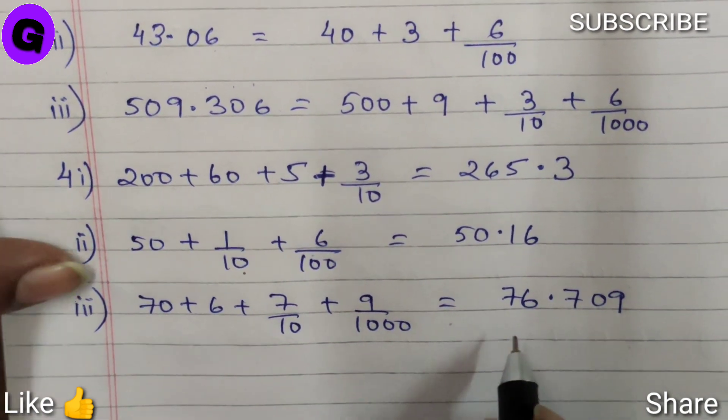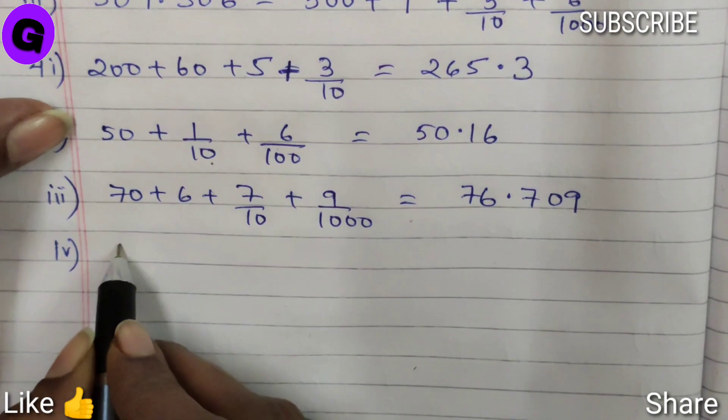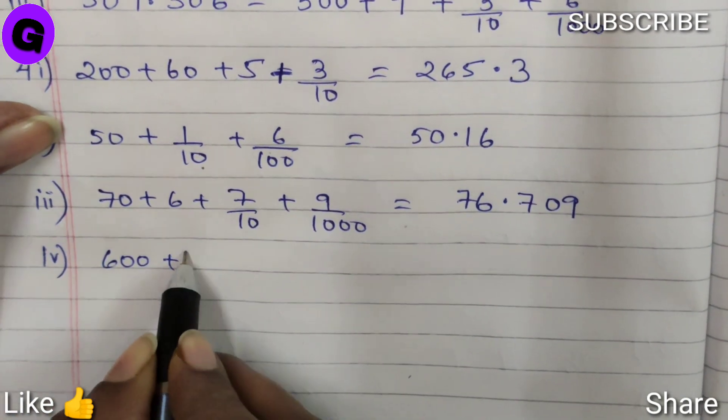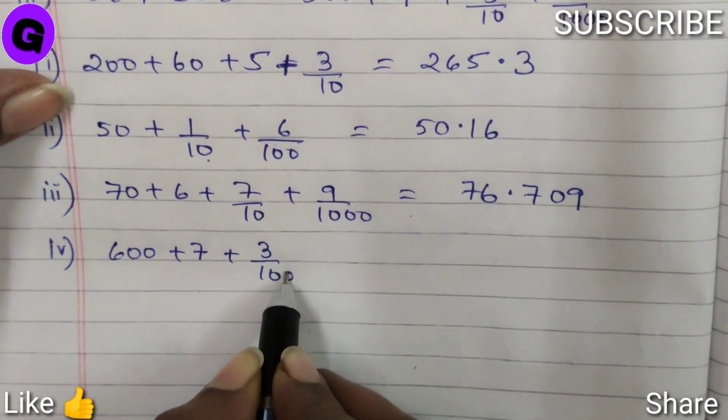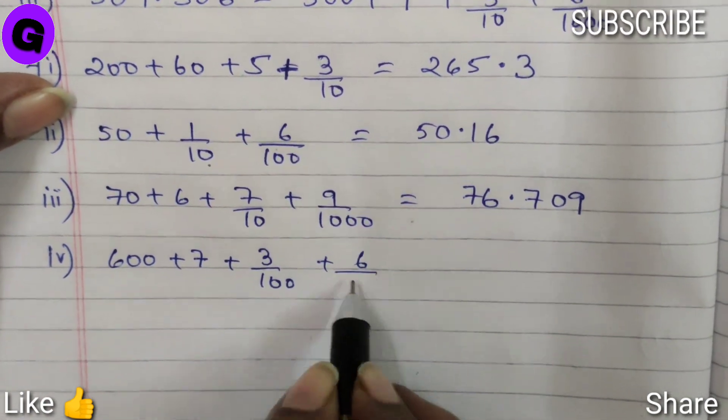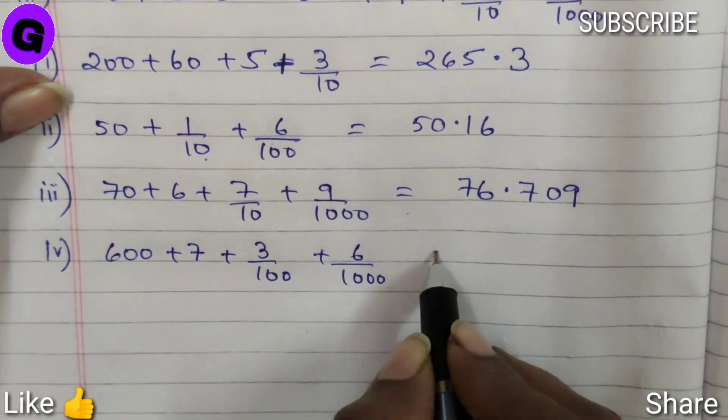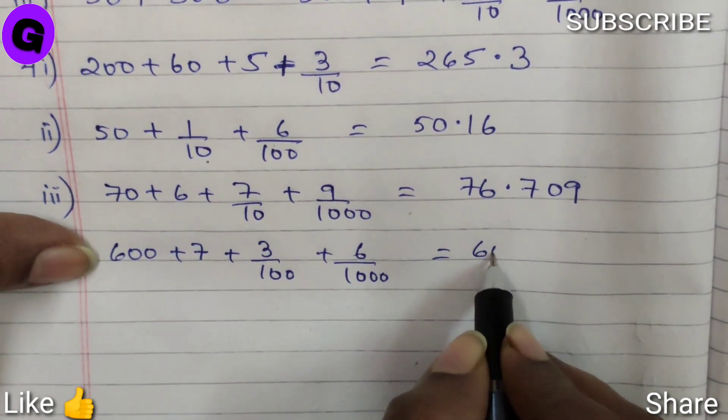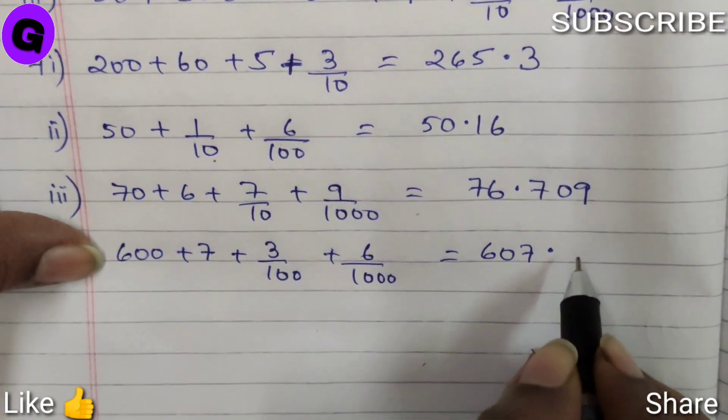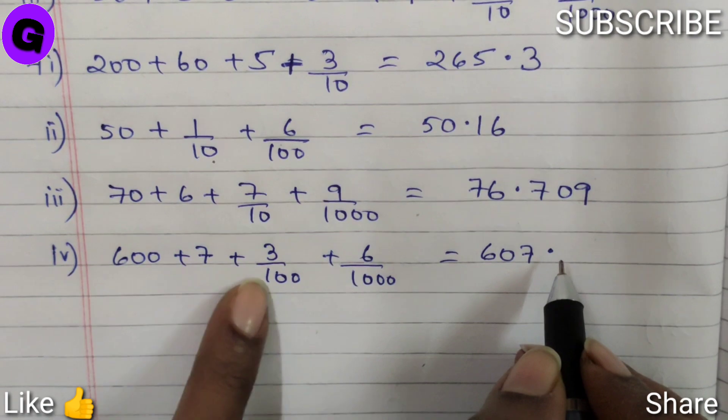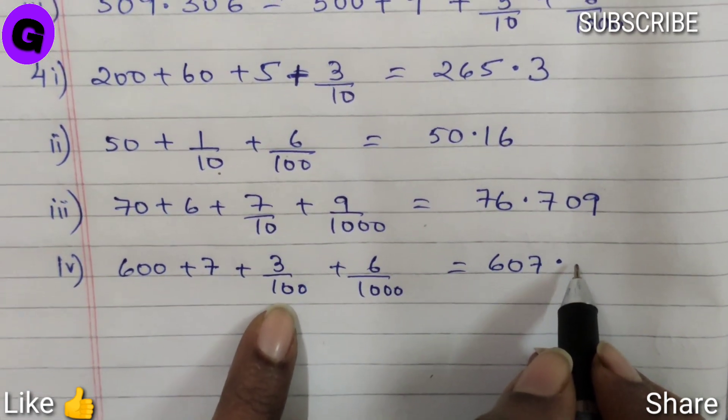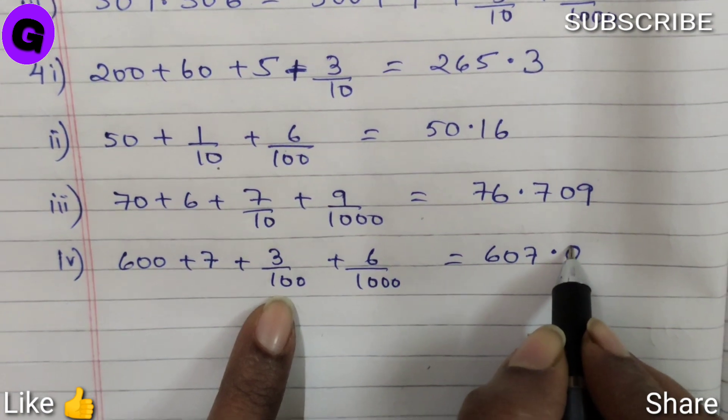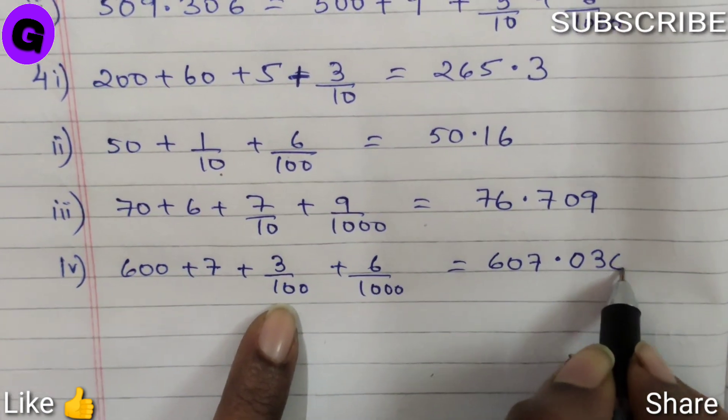Next number 4, 600 plus 7 plus 3 by 100 plus 6 by 1000 will give us 607 point. Now 3 is on hundredths, that means tenths place there is no figure, that means we will write 0, then 3 and 6.